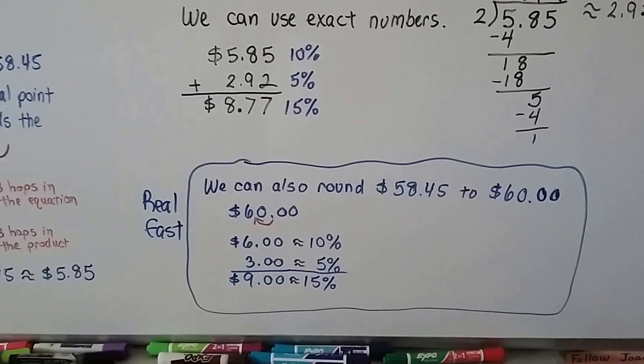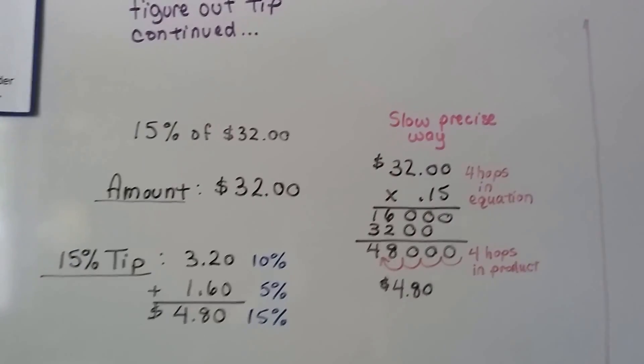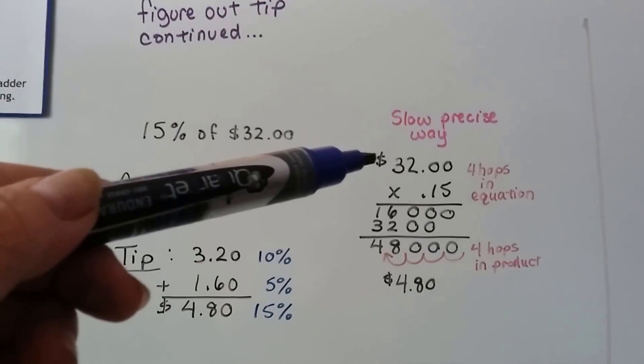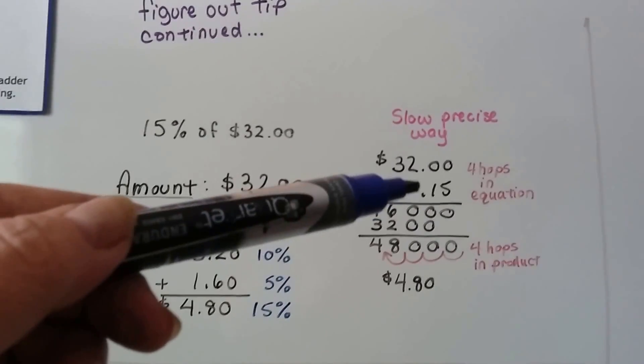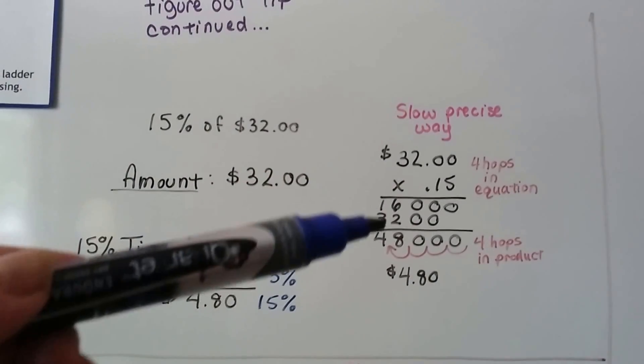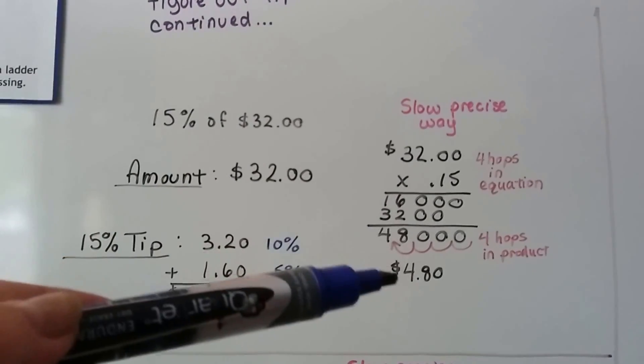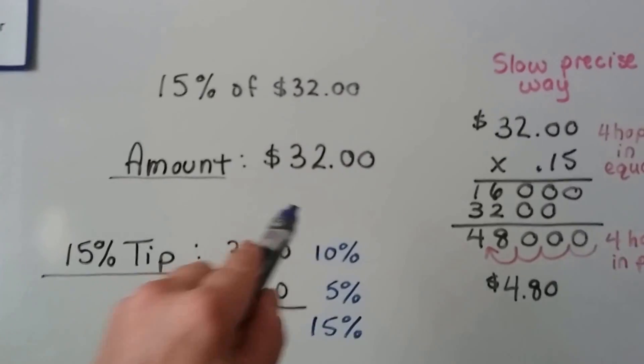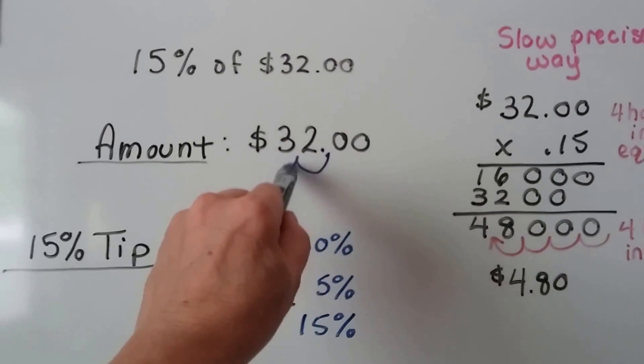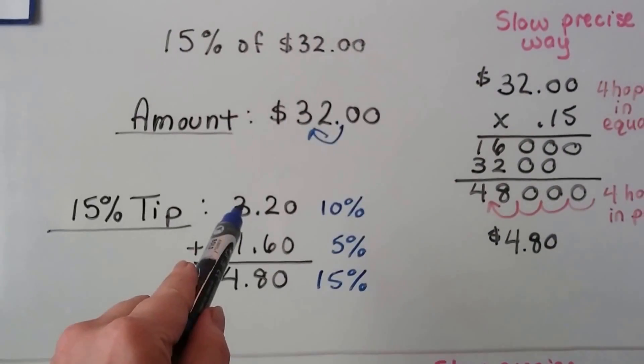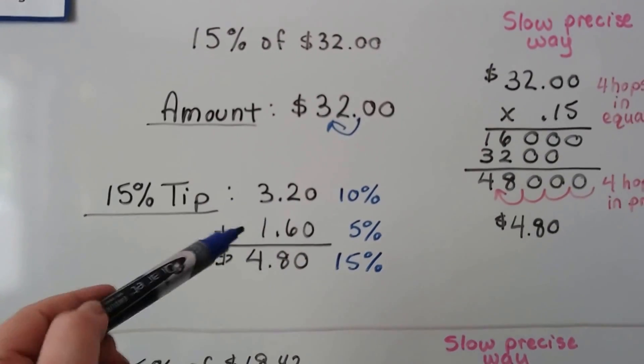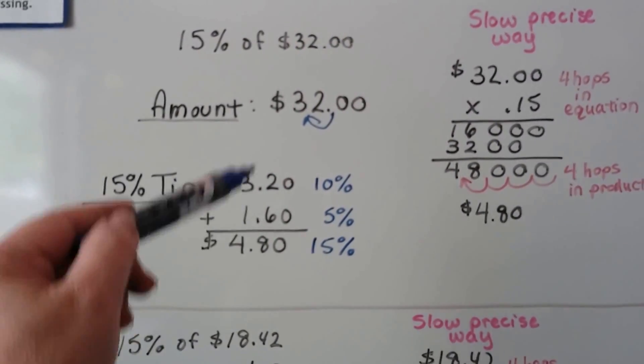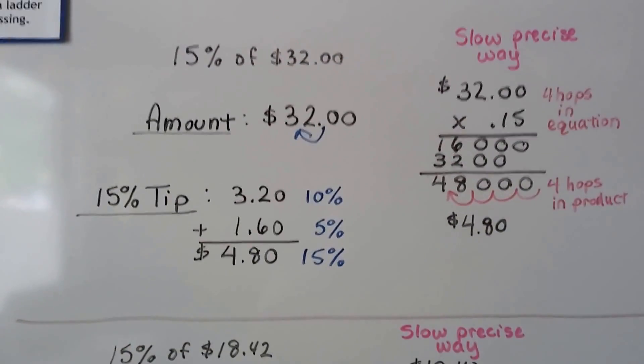Now, let me show you something else. We can do it again. If we need to find 15% of $32, we can do it the slow way. We can multiply $32 times .15. There's four hops in the equation. There's going to be four hops in the product. We get $4.80. But we can just move that decimal place over one space and make $3.20 for our 10%, cut it in half, and get $1.60 for our 5%, add them together, and get our $4.80. See?